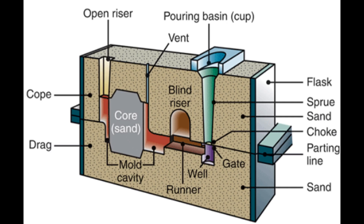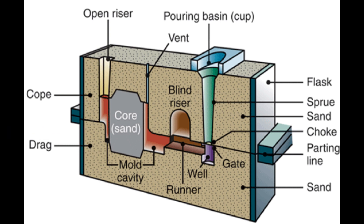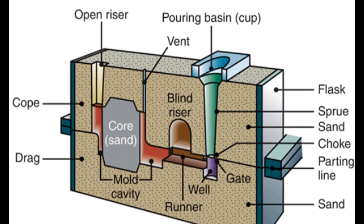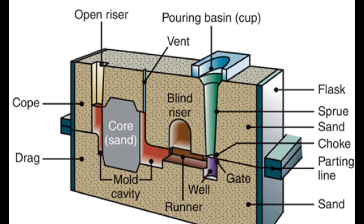A sand casting mold consists of two parts: the upper part is called the cope, while the lower one is called the drag. They contain the cavity and the gating system. The gating system consists of: a pouring basin, which receives the molten metal from the crucible; a sprue, which is the vertical channel connecting the basin to the gate; the gate, which allows molten metal to enter the runner — the horizontal part directing metal to the mold cavity; and a riser, which acts as a reservoir of molten metal to compensate for shrinkage during cooling.